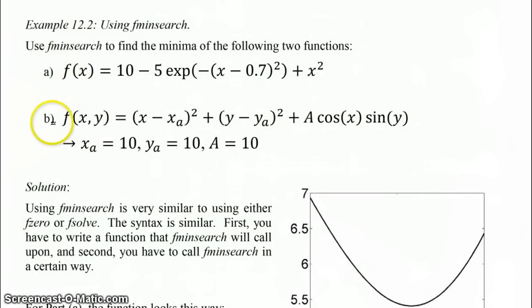This function here in part A, and this function of two variables here in part B. Note the function in part A takes in one variable and it spits out a scalar, so a single value f. And the function in part B takes in two variables, x and y. It has three different parameters which are adjustable: xa, ya, and capital A. And it spits out another single scalar value, f.